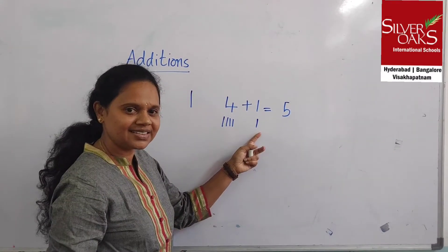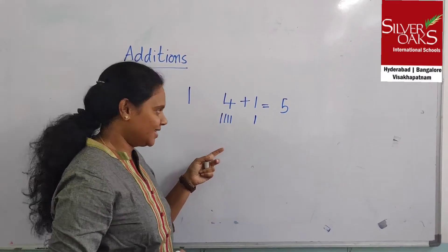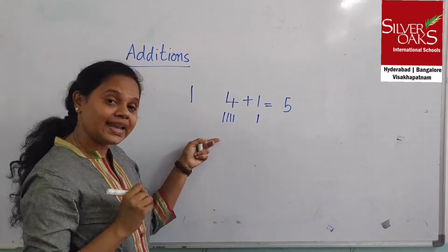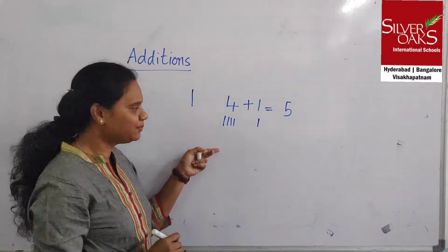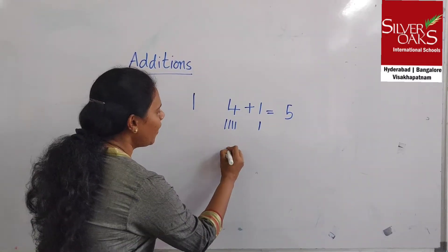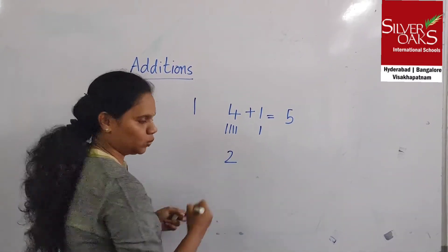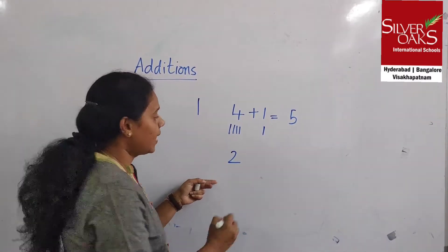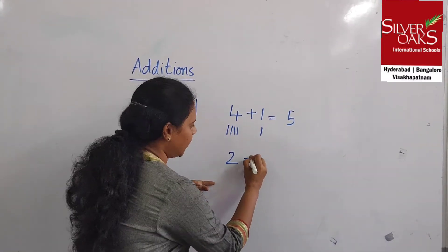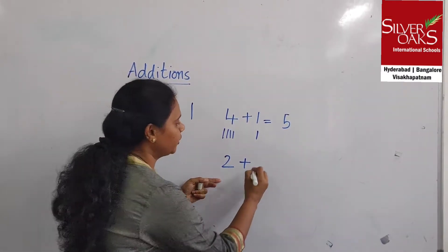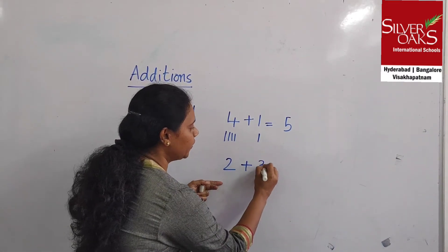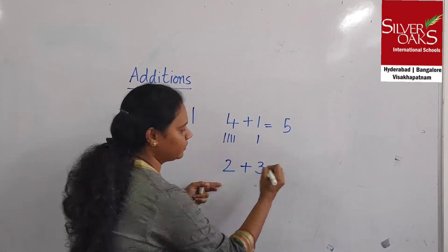So 4 plus 1 will be 5. Right? Yes. Shall we look at another example? Now I have 2 plus I want to add 3 more.